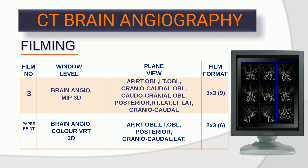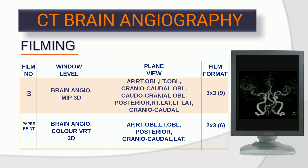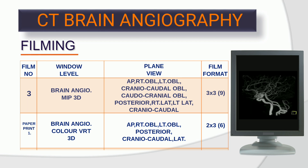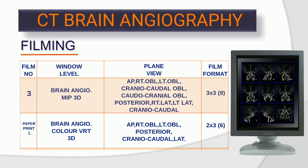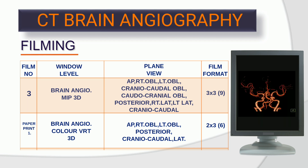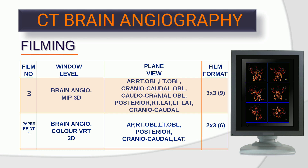Film 3 — window level: brain MIP 3D; plan views: AP, right oblique, left oblique, craniocaudal oblique, caudocranial oblique, posterior, right lateral, left lateral, craniocaudal; film format: 3x3, 9 images. Paper print 1 — window level: brain angio color VRT 3D; plan views: AP, right oblique, left oblique, posterior, craniocaudal, lateral; paper print format: 2x3, 6 images.